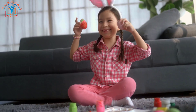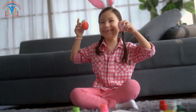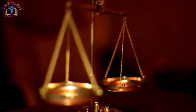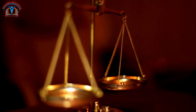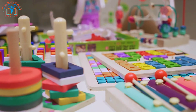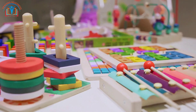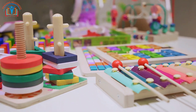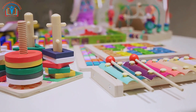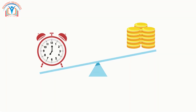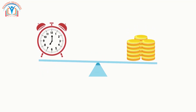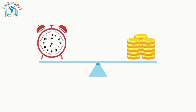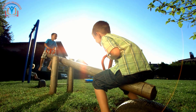Let's begin by understanding what weight is all about. Imagine weight as the measure of how heavy or light something is. Just like you have different size toys, you also encounter different weights in everyday objects. Think of weight like a seesaw — when the seesaw is balanced, it means both sides have the same weight.